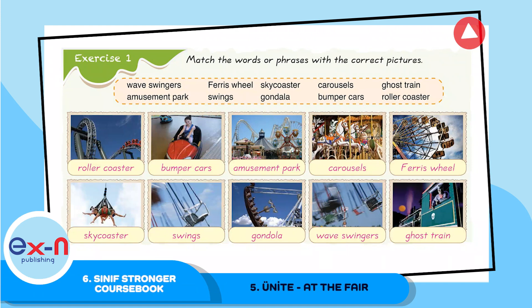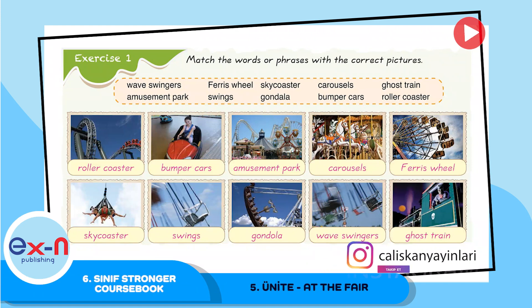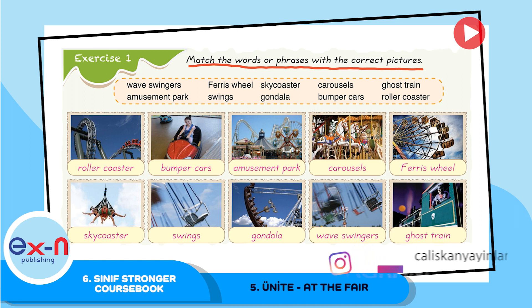Hello, welcome to Unit 5, Exercise 1. Match the words or phrases with the correct picture. Picture 1. Rollercoaster. Bumper cars. Amusement park.